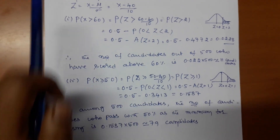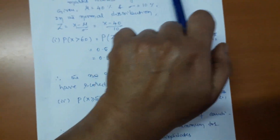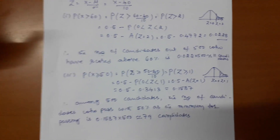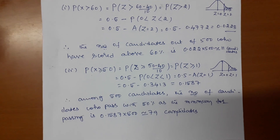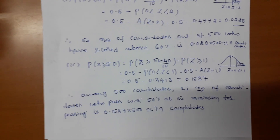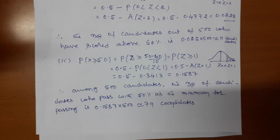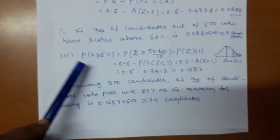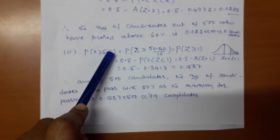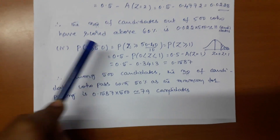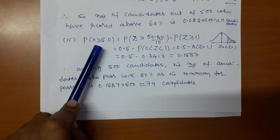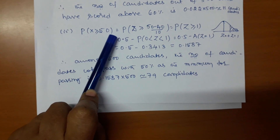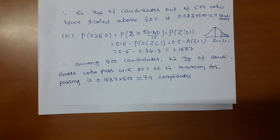Moving to the next case: how many will pass if 50% is fixed as the minimum for passing? For example, in an engineering exam if the minimum to pass a subject is 35, students may score up to 100. So 50 as the minimum means it is enough to find P(X ≥ 50) — students scoring 50 or above are passed.